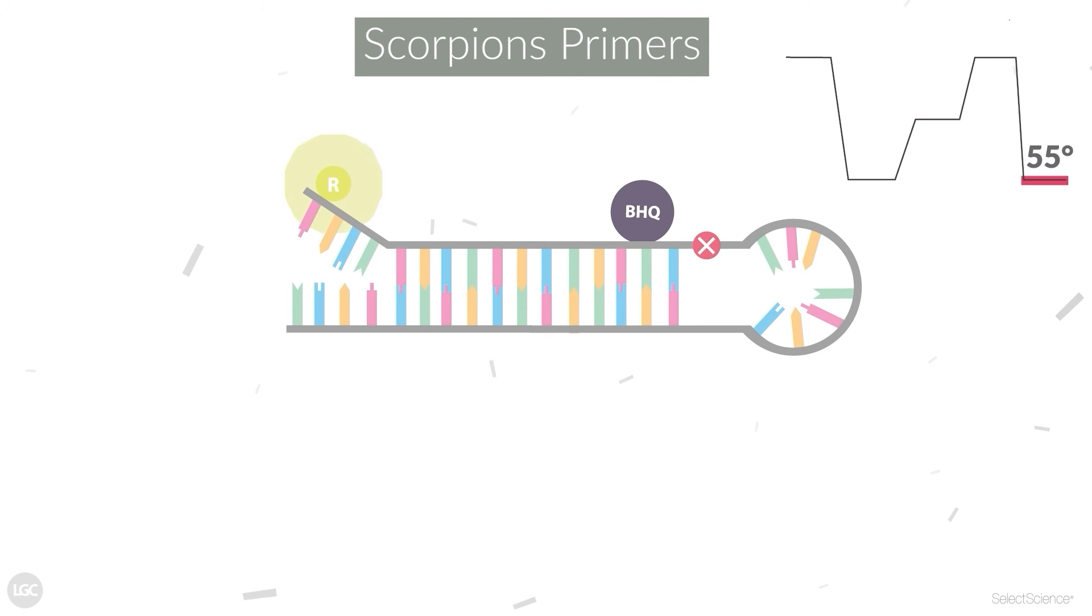This prevents the hairpin loop from reforming and separates the fluorophore and quencher, releasing fluorescence.